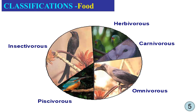Now we are going to classify the birds based on the food they consume. Birds that consume only plant material are called herbivores. Birds that eat carcasses or animal materials are called carnivores. Birds that eat both plant and animal materials are called omnivores. Birds that exclusively eat fish are called fish-eating birds, and those that eat insects are called insectivorous birds.